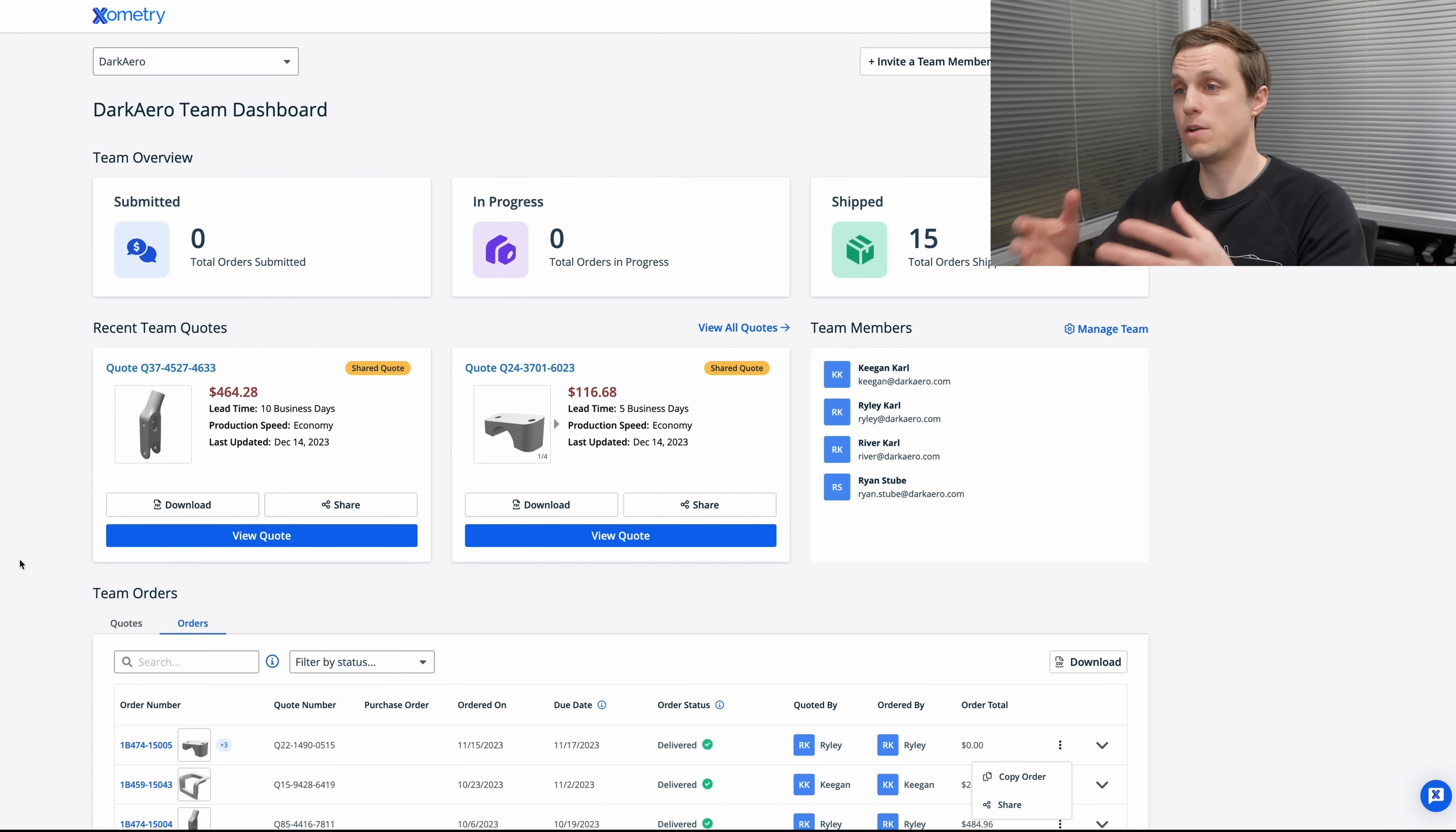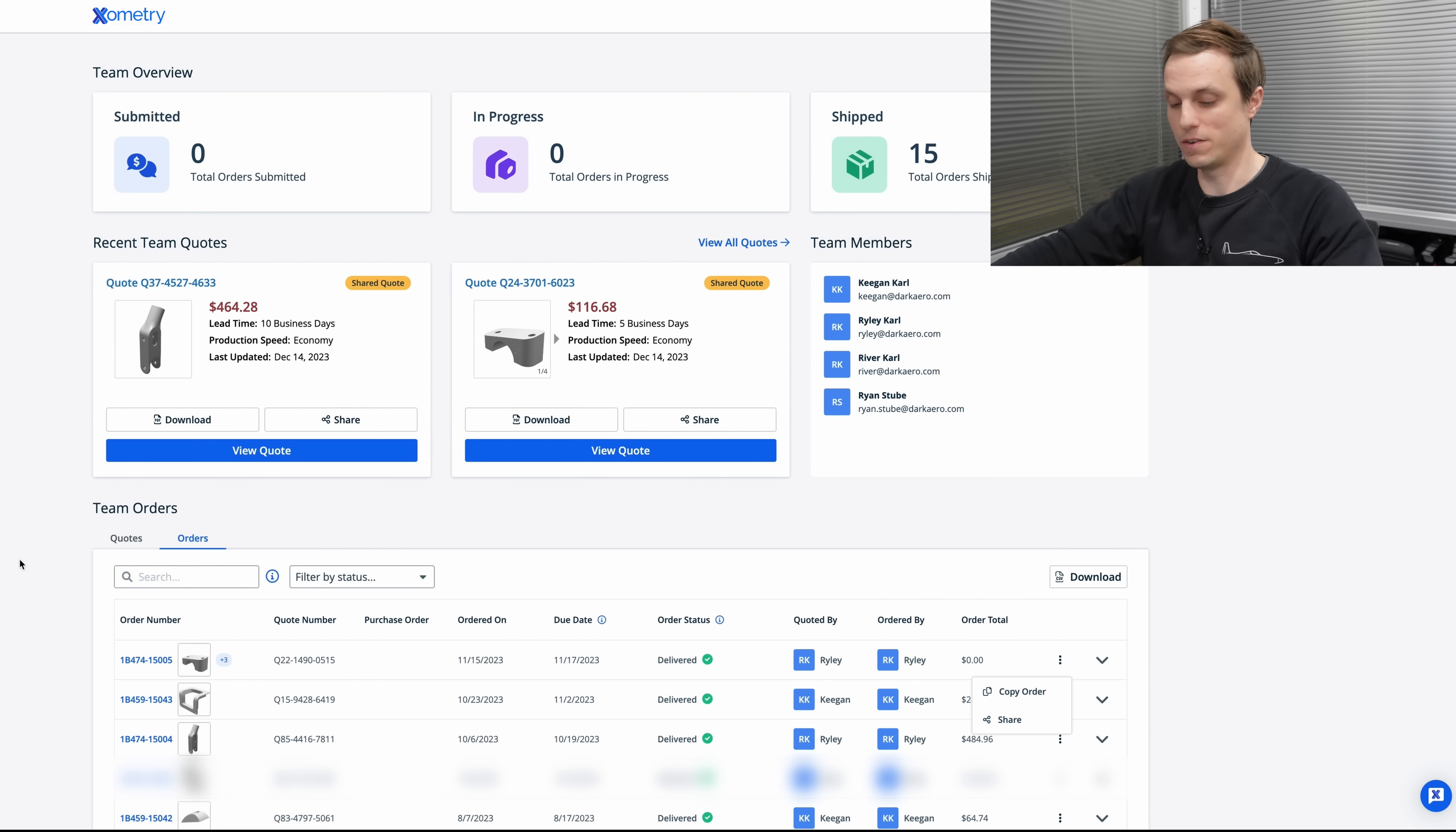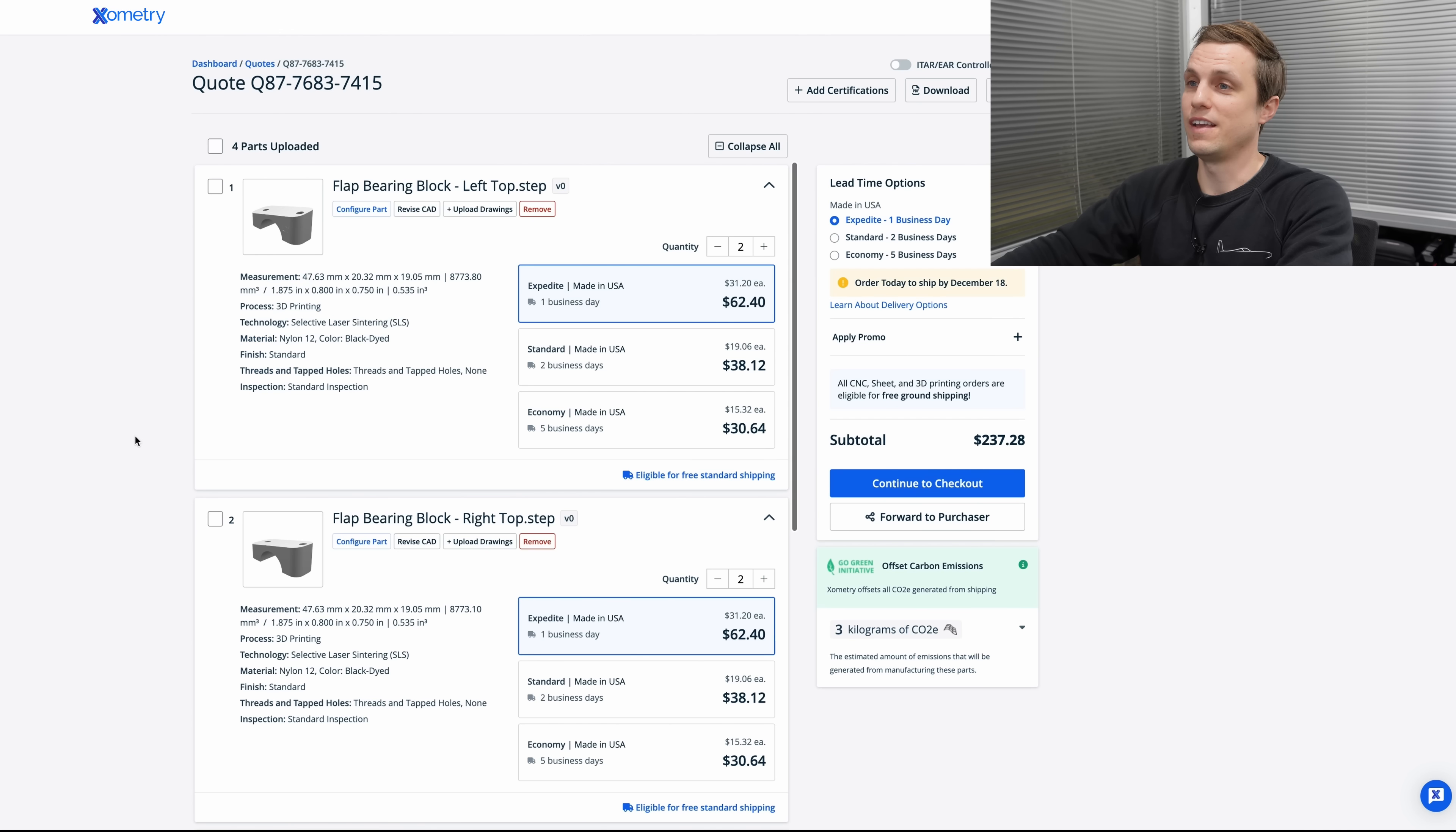Within Team Space not only can I see the orders and quotes that I've made but also the ones that my team members have. So I've added the team members from Dark Arrow here and I can see their quotes and their parts that they've ordered. So right here I have a quote that's been made by Riley. He quoted it and he ordered it and there's actually these bearing blocks right here but in addition to just being able to view it I can also create a copy of that order and if need be without having to bug the rest of the team members I can submit another order. So if you're part of a company that has multiple team members that are ordering parts through Xometry and you want to consolidate that all to one area and streamline your workflow I highly encourage you check out Team Space and if you want to learn more there's a link in the description.